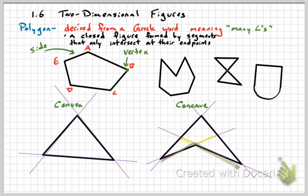Polygons also cannot have openings. Even if a figure has straight edges and vertices, if it isn't fully closed — like a box with one side missing — it is not considered a polygon. You'd have to connect all the sides to make it one.